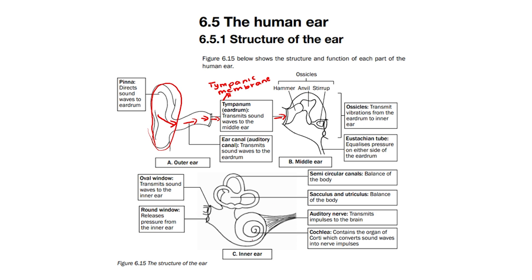We also have in the middle ear a small tube called the eustachian tube. The eustachian tube equalizes pressure on either side of the tympanic membrane and is also connected to the nasal area. We then move to the inner ear.